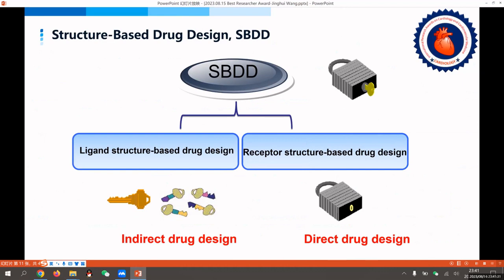Computer-aided drug design development is mainly divided into two parts: one is indirect drug design and the other is ligand-based receptor design.